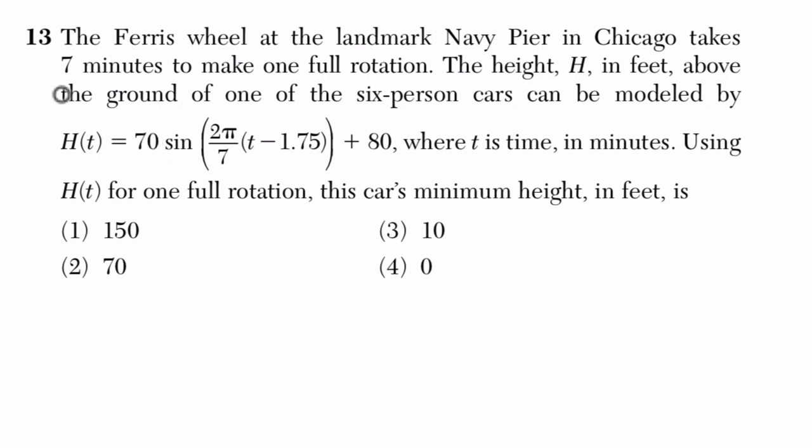Alright, so there's a Ferris wheel and it's spinning. How fast is it spinning? Well, it says it right here. Seven minutes to make one full rotation, and the height is measured by h in feet above the ground of one of the six-person cars. And here's our equation. It's a big equation where t is time in minutes. Using h of t for one full rotation, this car's minimum height in feet is what?